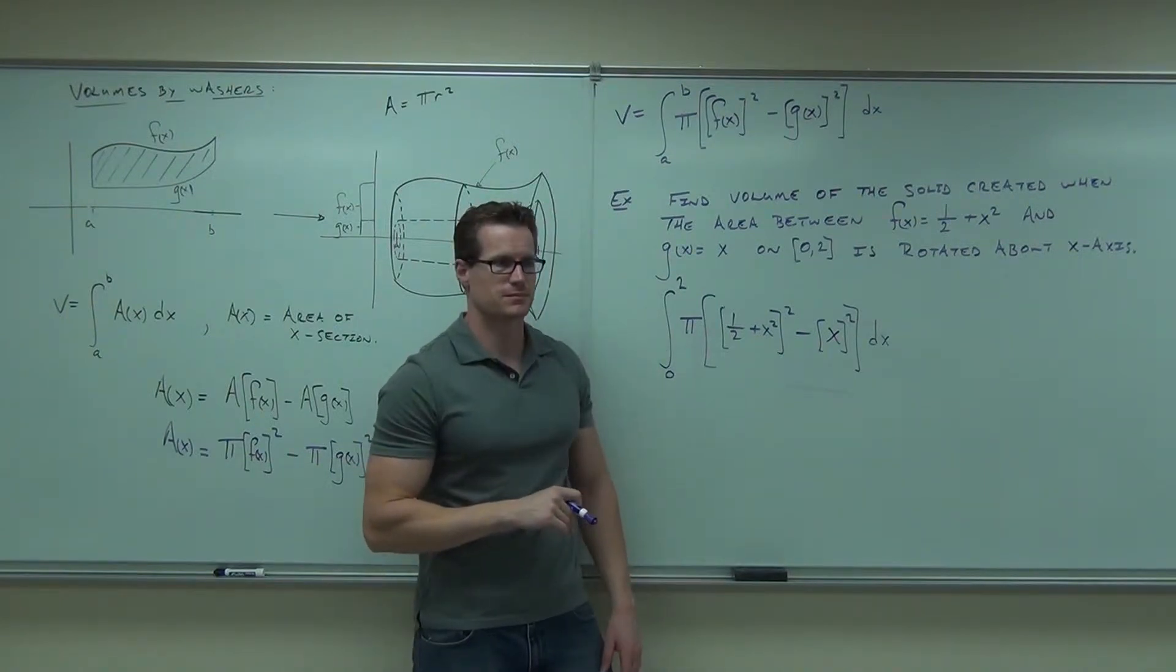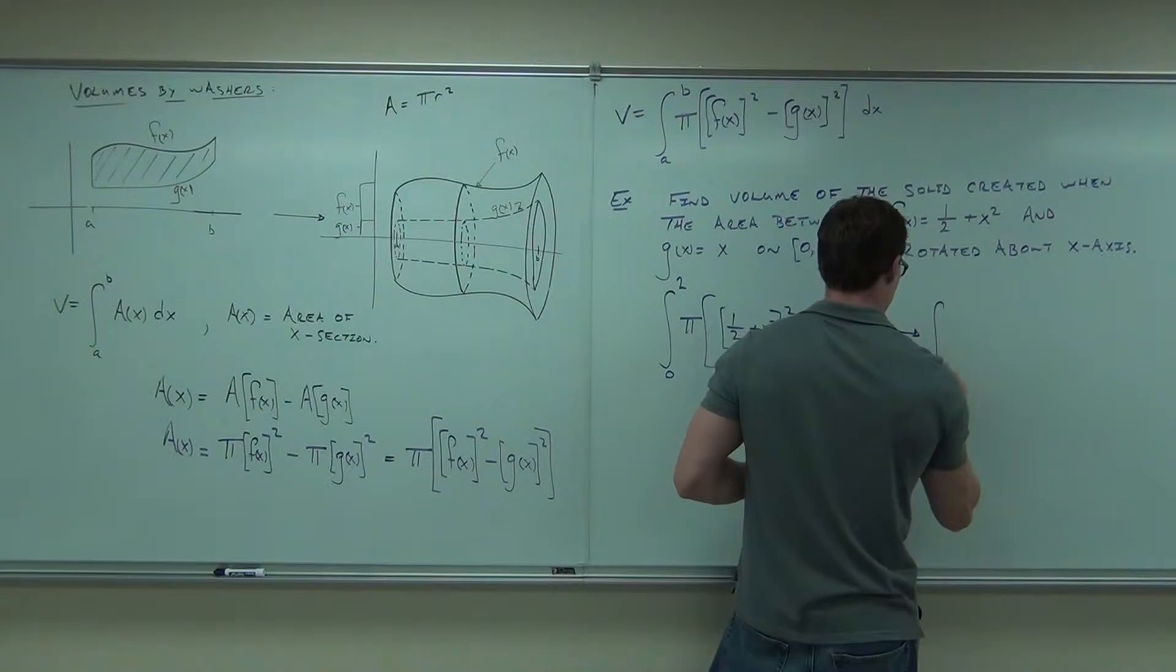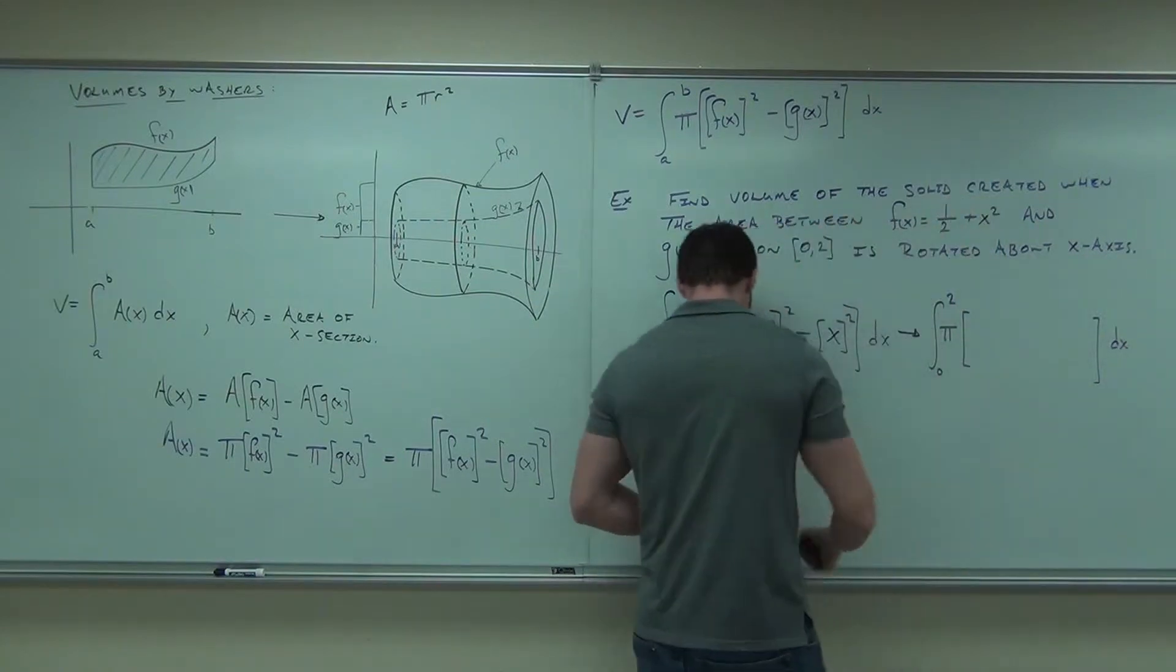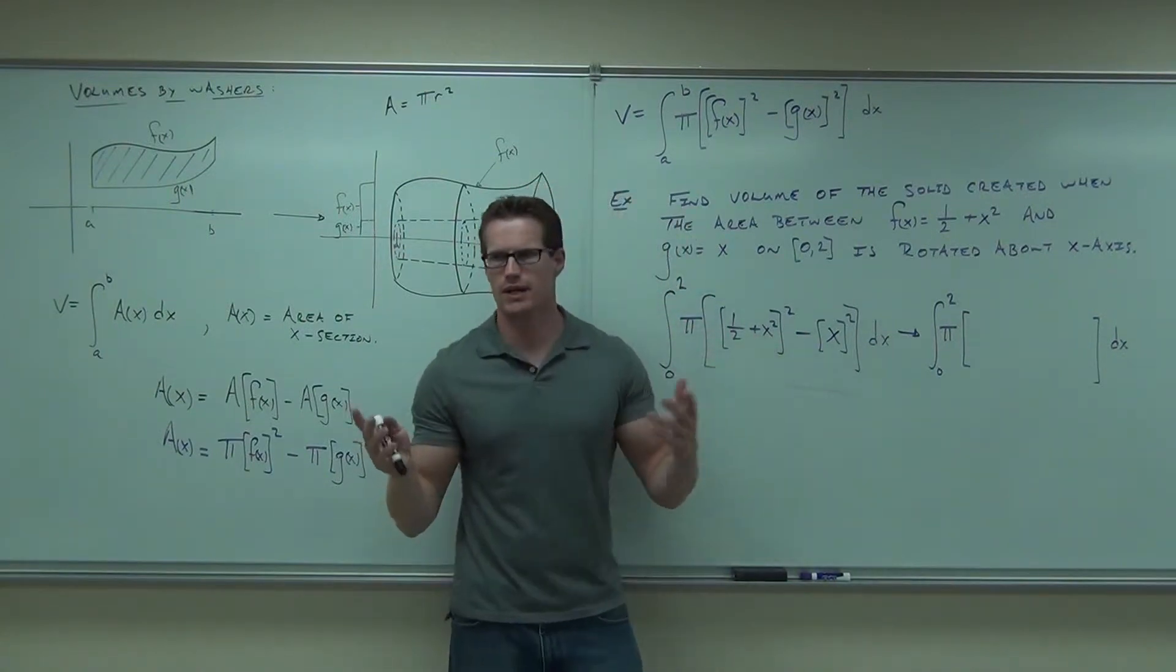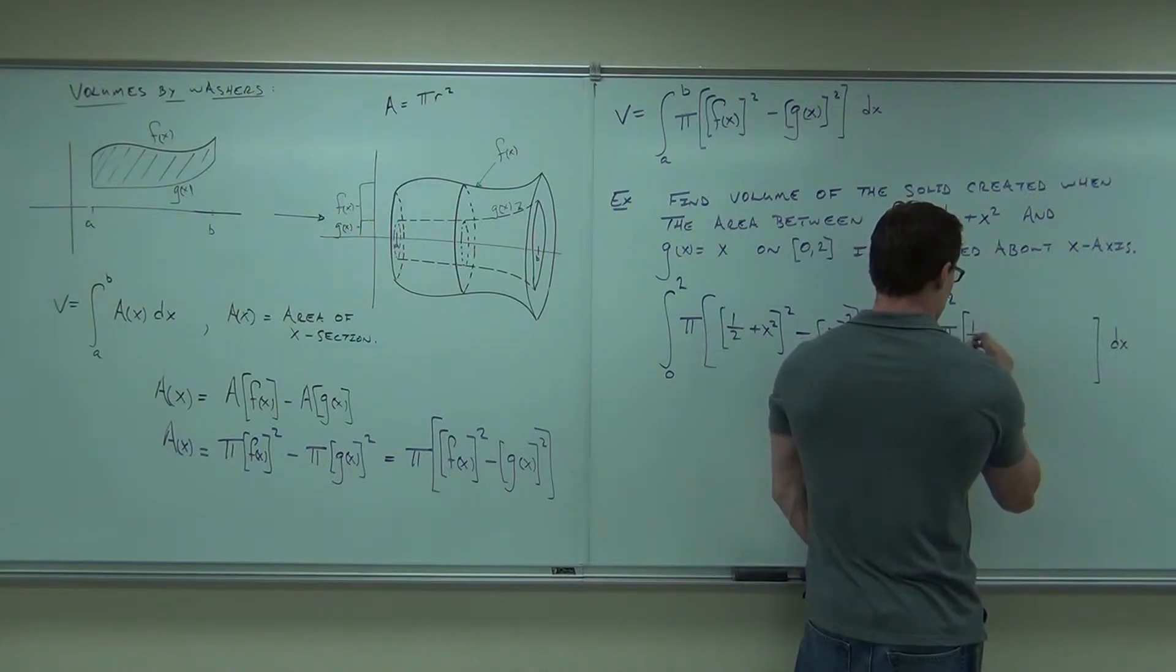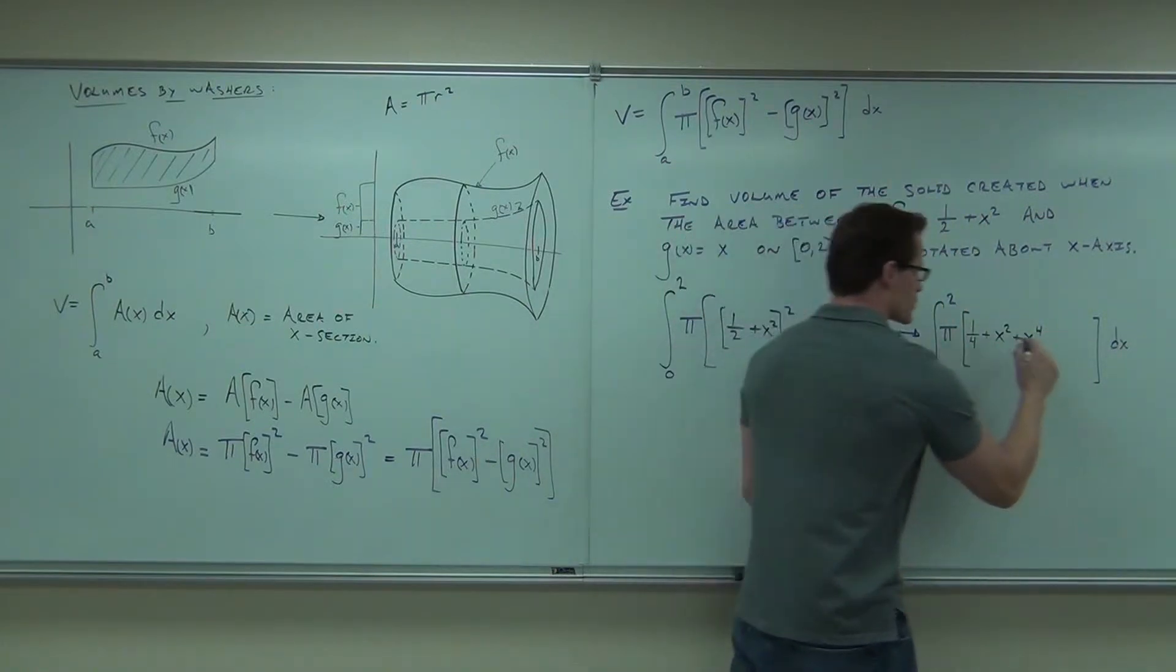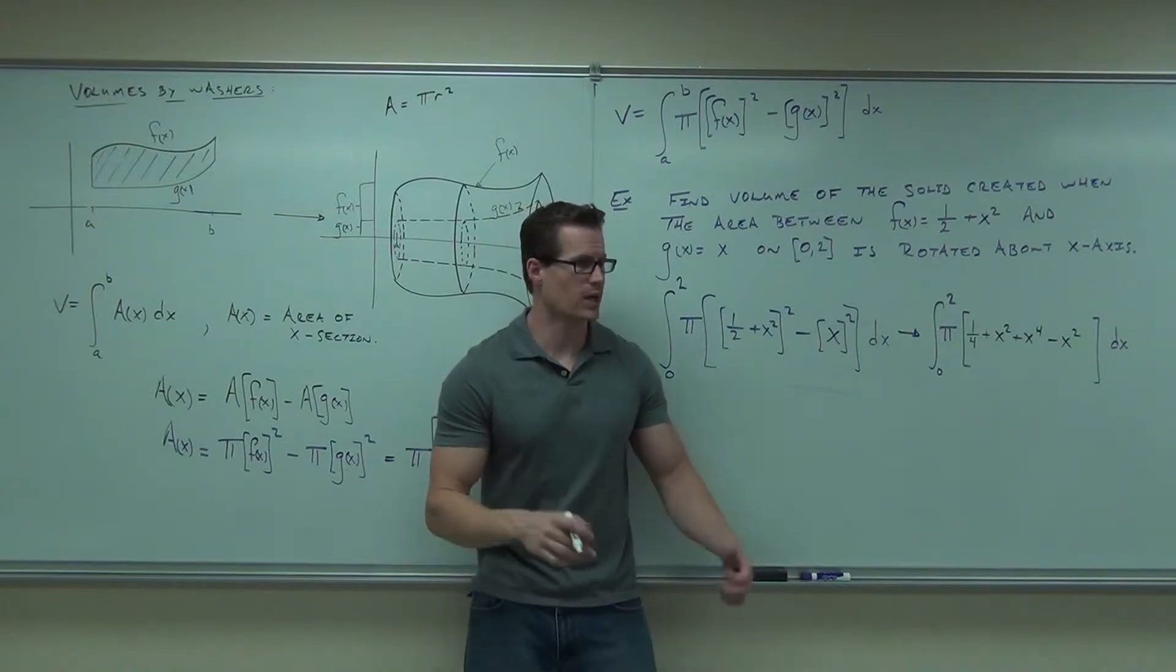Now what? Go for it. See if you can foil that out. So foiling all that out. If you're doing it in your head, great. If you want to write it on the side, great. Just get the right answer. Make sure you foil it correctly. This is going to be one-fourth plus x squared plus x to the fourth. And then you have this minus x squared. I would like to know if you got the same thing on your paper that I got on my paper. Did you get the same thing?